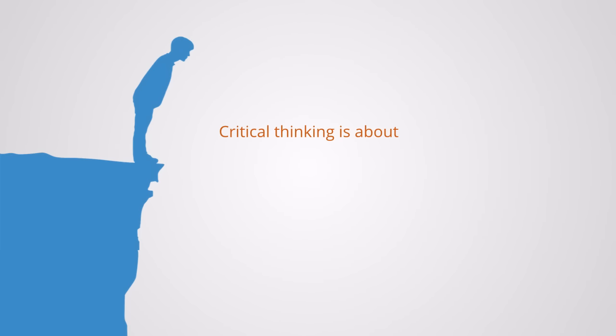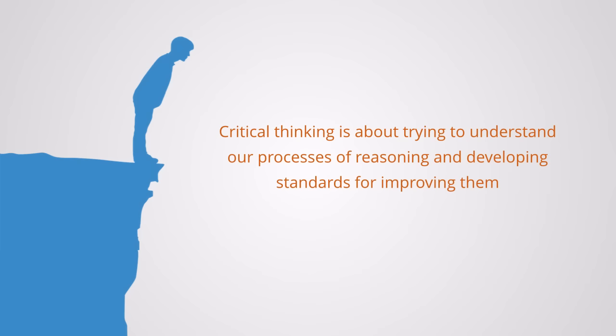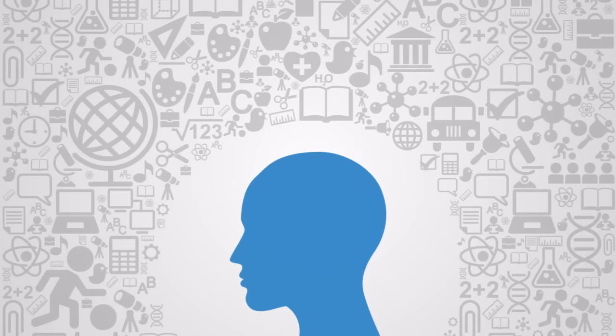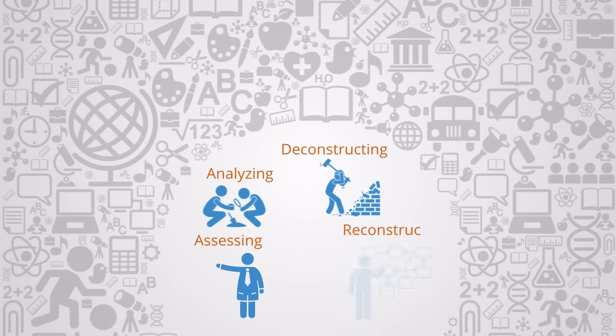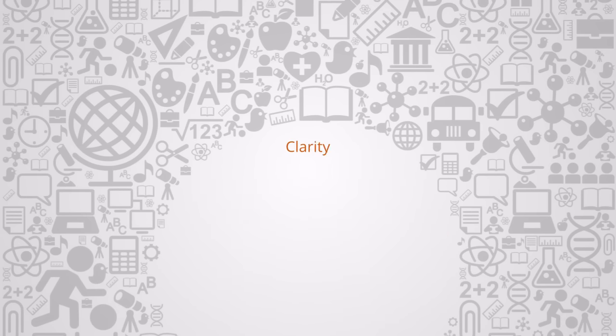Critical thinking is about trying to understand our processes of reasoning and developing standards for improving them. It is a way of thinking about any subject in which the person improves the quality of their thinking by assessing, analyzing, deconstructing, and reconstructing it to try and improve its clarity, accuracy, relevance, depth, breadth, and logical consistency.